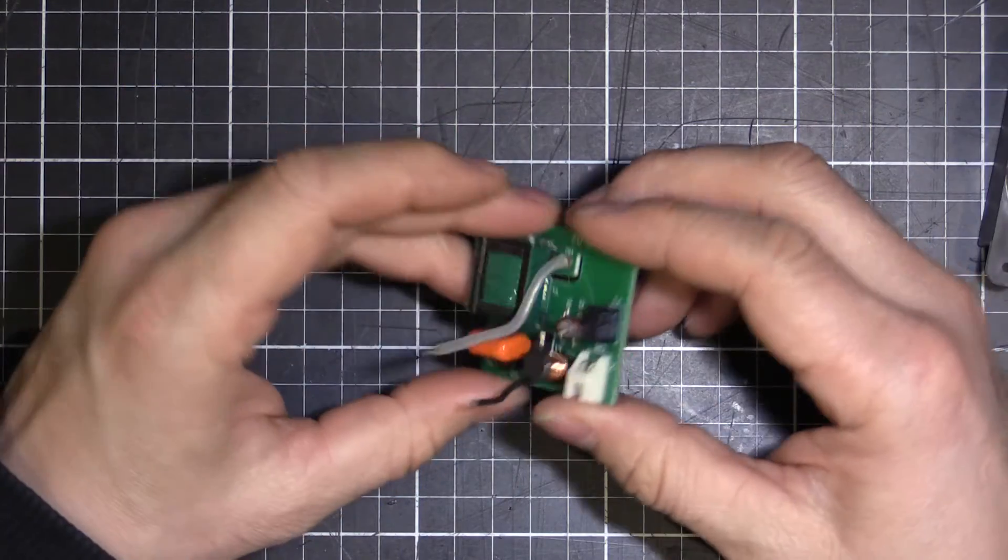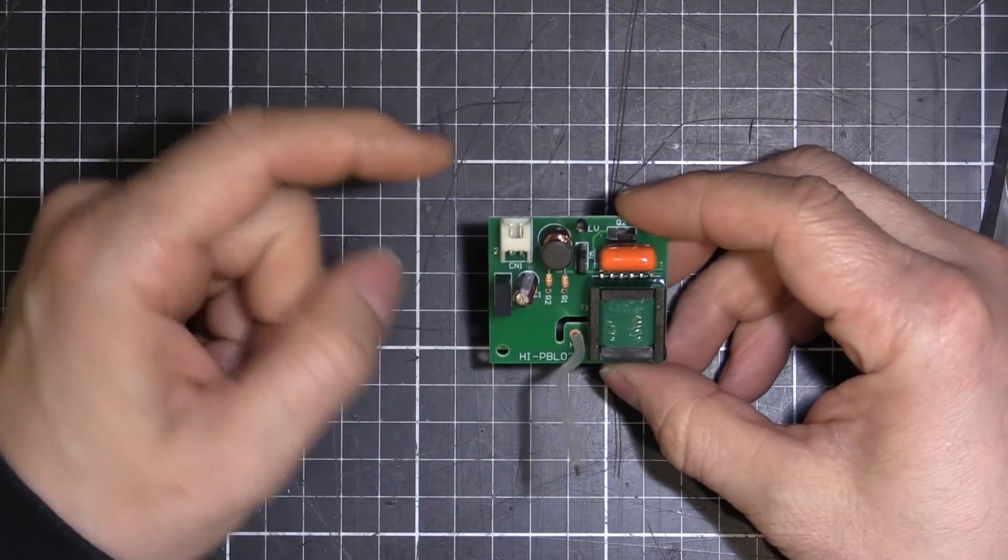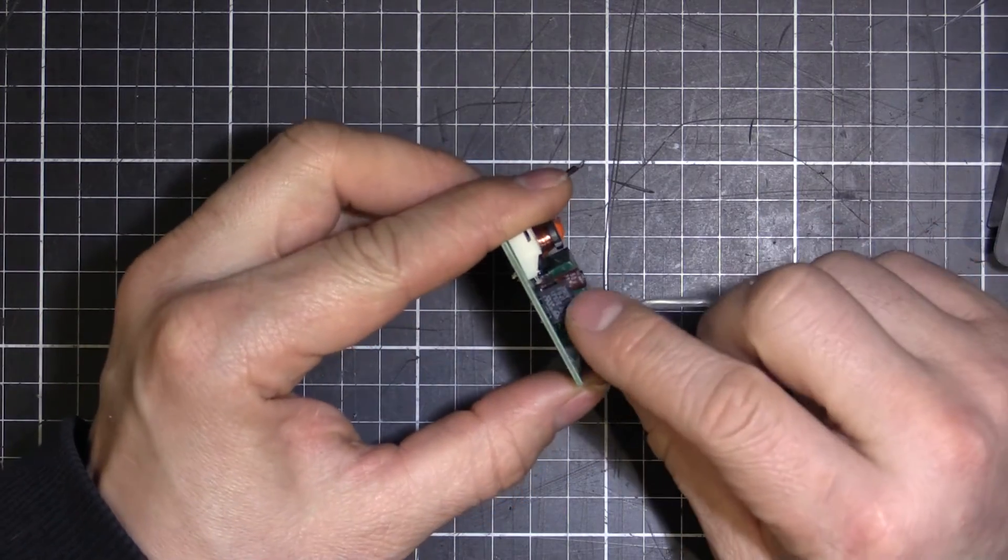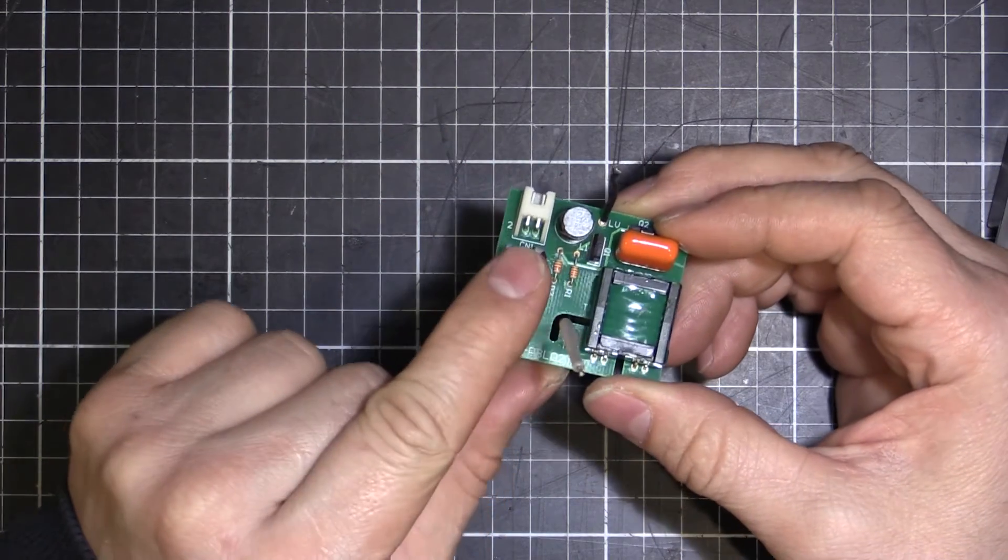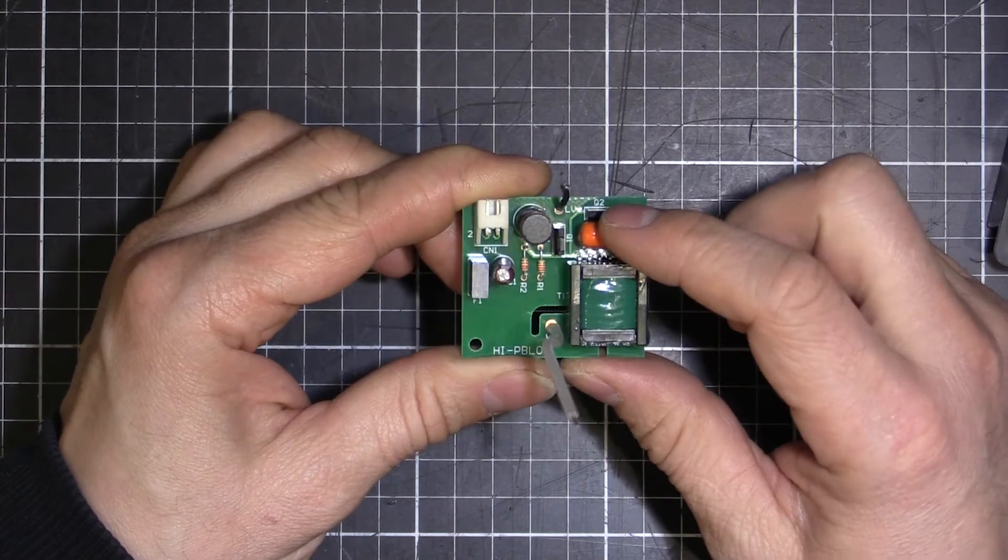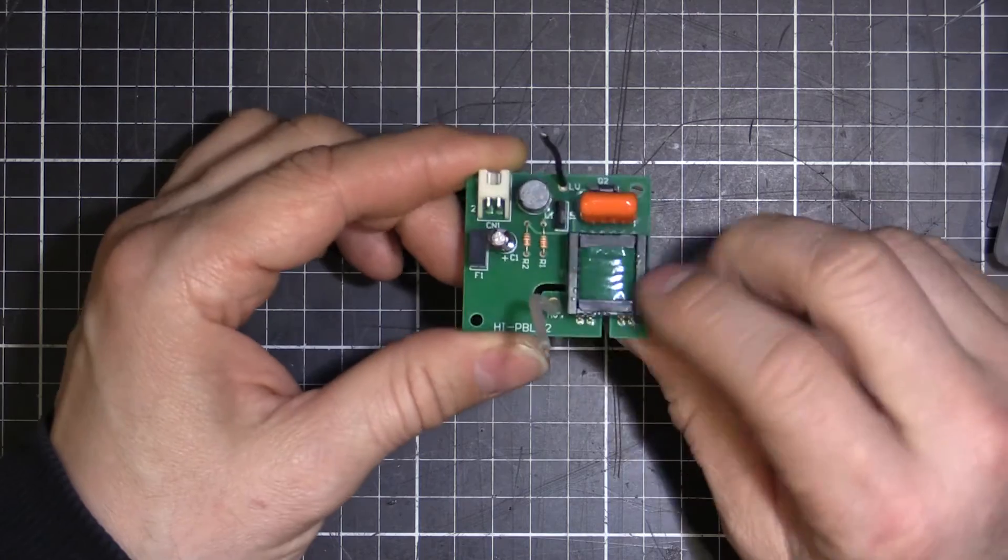But then we've got the circuit. So it's a pretty simple looking circuit. We've got the voltage in here. Looks like we've got a fuse. That little black box there is a fuse. A capacitor for decoupling or smoothing or something. There's our high voltage transformer there. Capacitor, inductor. There'll be a resonant circuit and some transistors for switching.